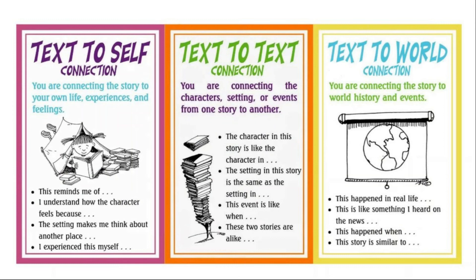Text-to-text connections are when you are connecting the characters, setting, or events from one story to another story that you've also read. Some ways you might find yourself making a text-to-text connection: 'The character in this story is like the character in…', 'The setting in this story is the same as the setting in…', 'This event is like when…', or 'These two stories are alike because…'. All of those sentence starters lead you into relating one story or text to another.